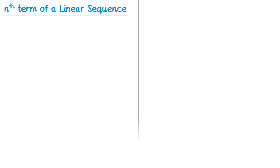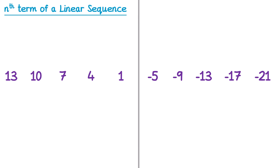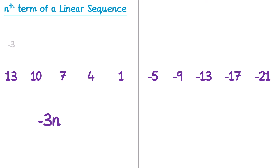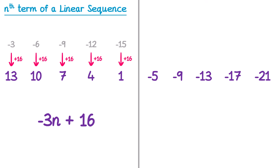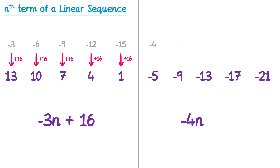Here are another two sequences to try. For the first question, to get from one term to the next, we're always subtracting 3, so it's negative 3n. We write out the negative 3 times table: negative 3, negative 6, negative 9, negative 12, negative 15. To get from here to our sequence, we're always adding 16, so it's negative 3n plus 16. For the next question, to get from one term to the next, we're always subtracting 4, so we need negative 4n. We write the negative 4 times table and work out how to get to our sequence — in all cases we're subtracting 1, so it's negative 4n subtract 1.